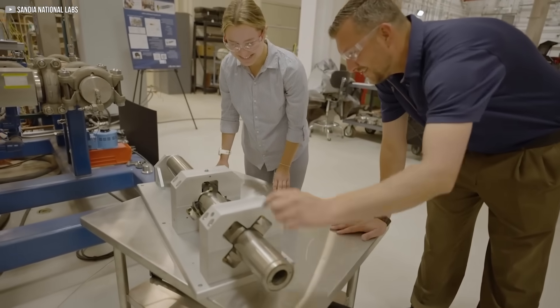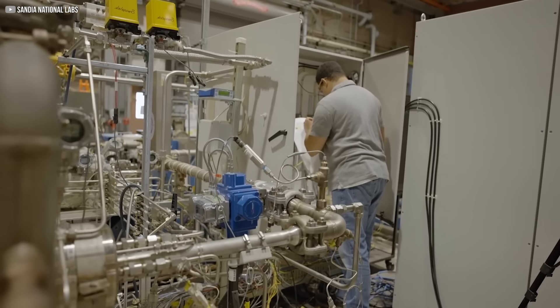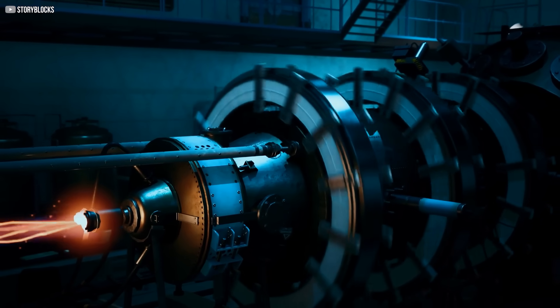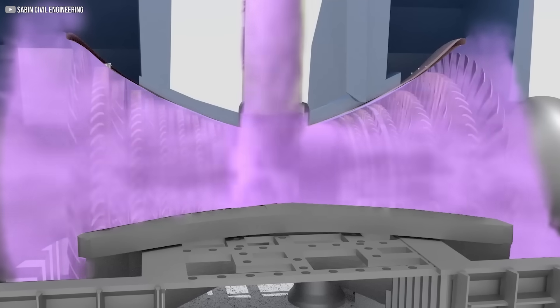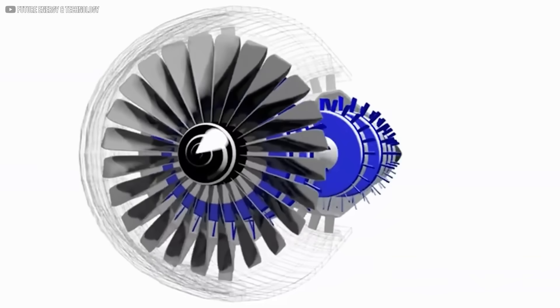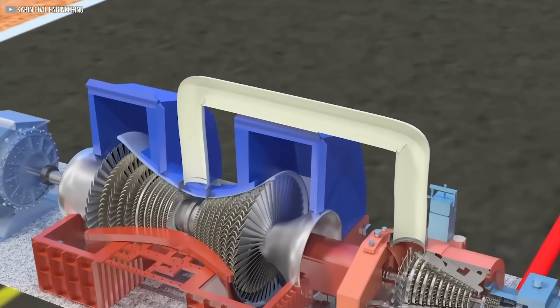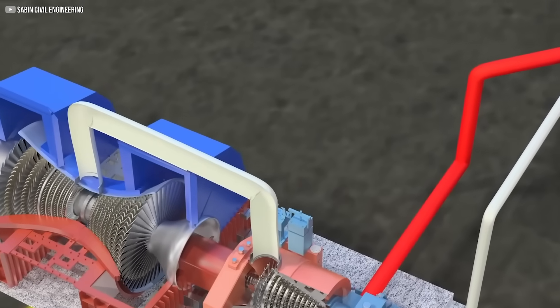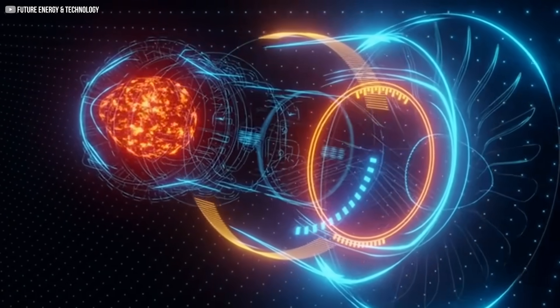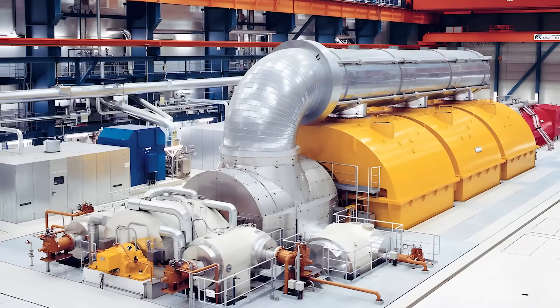To address this, researchers are focusing on developing advanced alloys and coatings that can handle the extreme conditions without degrading over time. These materials must be able to endure temperatures exceeding 500 degrees while maintaining their strength and flexibility. The high-speed flow of supercritical CO2 also requires precision engineering to ensure that every component can handle the pressure without leaking or breaking down. Overcoming these material challenges will be essential to making supercritical CO2 turbines a viable option for large-scale deployment in power plants.